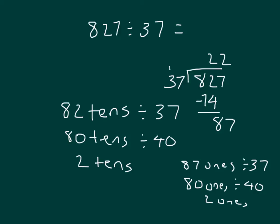2 times 37 is 74, and 87 minus 74 is 13. 13 is our remainder.